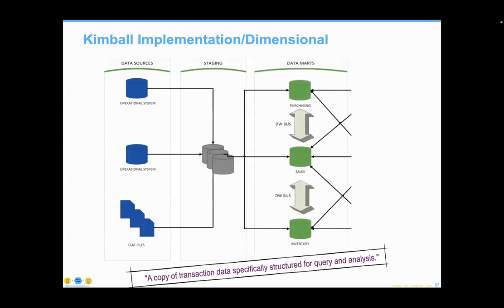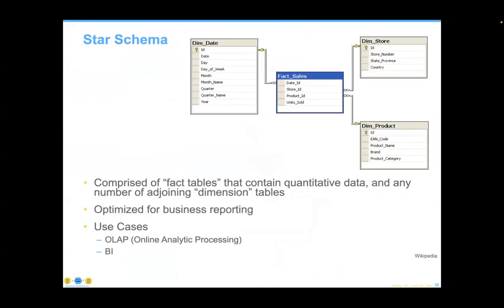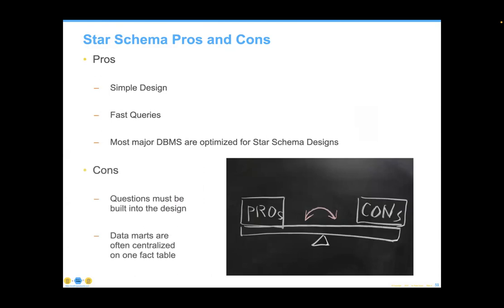Neither Inmon nor Kimball has ever agreed on anything except one thing, which I'll show you at the end. It's important you understand the distinctions because this is what's out there. In the Kimball approach, operational systems go into a staging area, then are directly put into use rather than a centralized data warehouse. This allows different types of reporting ability. The beauty of this is something called a star schema — the fact table is the central table, and incorporating the right dimensions gives you a lot of specific cases that are very easy to work with. Simple to design, but not so easy to evolve into something else later.